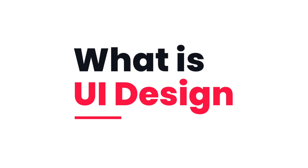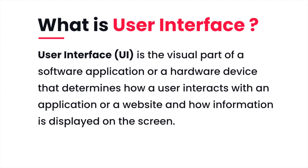What is UI design? UI design hota kya hai? UI design is user interface. User interface is the visual part of a software application or a hardware device that determines how a user interacts with an application or a website, and how information is displayed on the screens. User interface ek visual part hota hai kisi bhi software application ya kisi hardware device ka.